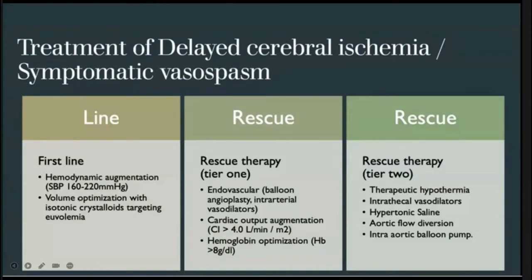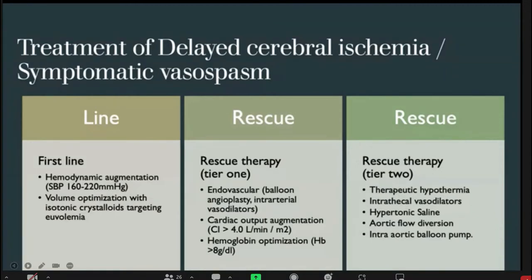Hemodynamic augmentation — that is, induced hypertension — is now the first-line treatment for symptomatic vasospasm. Volume should be maintained using isotonic crystalloids targeting euvolemia rather than hypervolemia. Systemic blood pressure can be increased to 160 to 220 based on the patient's baseline and characteristics. Rescue therapy can include endovascular arterial treatment or angioplasty, cardiac output augmentation, and hemoglobin optimization. Experimental treatments such as therapeutic hypothermia, intrathecal vasodilators, hypertonic saline, aortic flow diversion, and intra-aortic balloon pump are limited to research centers.